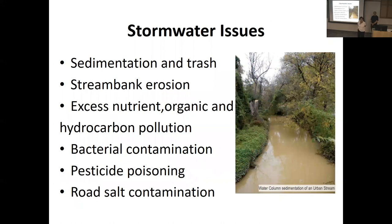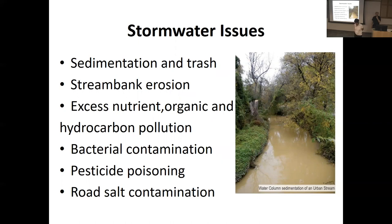Stormwater issues: these are why we don't want stormwater to bypass the ground. There's sedimentation and trash, stream bank erosion, excess nutrients, organic and hydrocarbon pollution from parking lots, bacterial contamination, pesticide poisoning, road salt contamination — all of these things are on impervious surfaces and get washed into our streams and rivers, causing pollution. It behooves us to get the water back in the ground and not let it flow into our waterways.